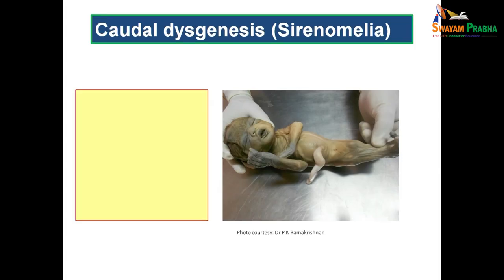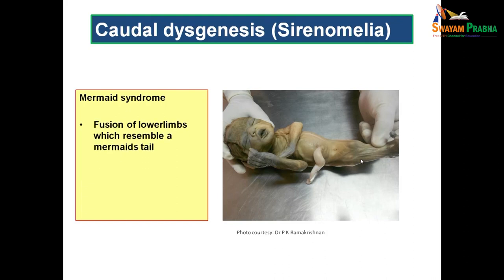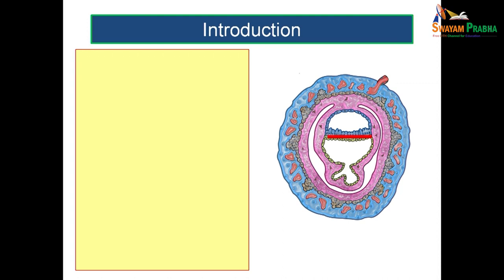In this session, we will be dealing with the development happening during the third week of intrauterine period. Before moving on to the topic proper, let us see a case. This is known as caudal dysgenesis or sirenomelia. When you look at the fetus, you can see that the lower limbs are not properly formed. The lower limbs are fused and it looks like the tail of a mermaid. Hence, this is known as mermaid syndrome. Towards the end of this session, you will get to know the basic anatomy behind the formation of mermaid syndrome.